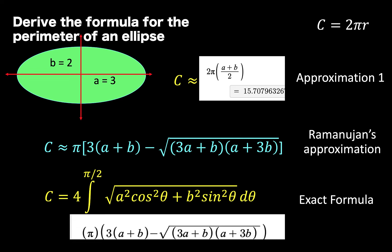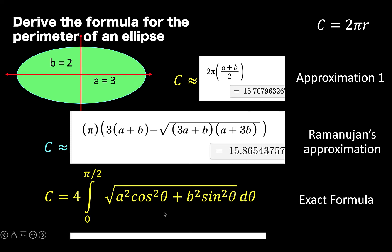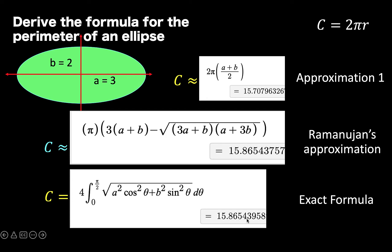Using Ramanujan's approximation, the result is 15.86543757, and there is only a difference of 0.15 from the first formula. The exact value using the calculus formula is 15.86543958. Notice that for the first five decimal digits after the decimal point, Ramanujan's and the calculus formula gave us the same result — the difference starts only at the sixth decimal place.